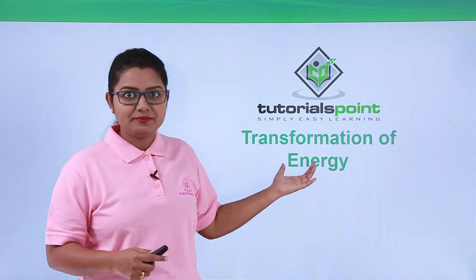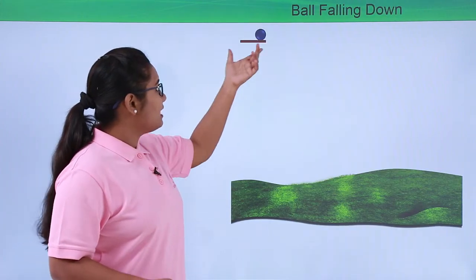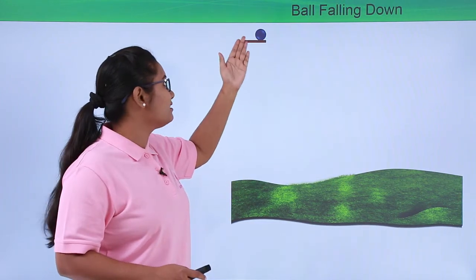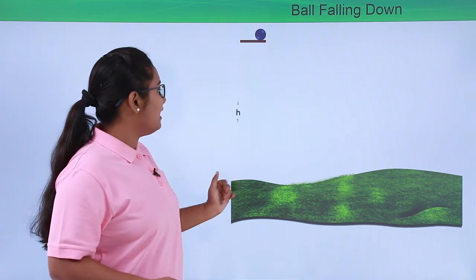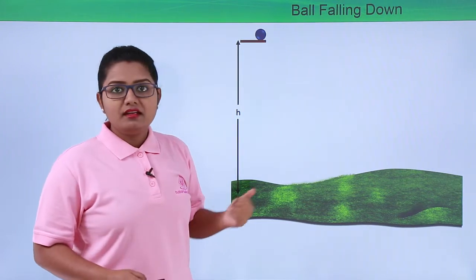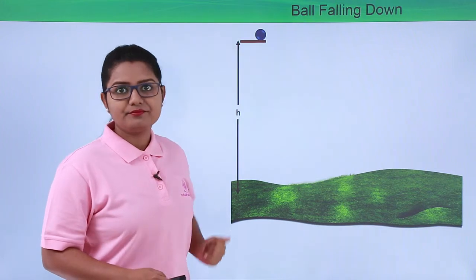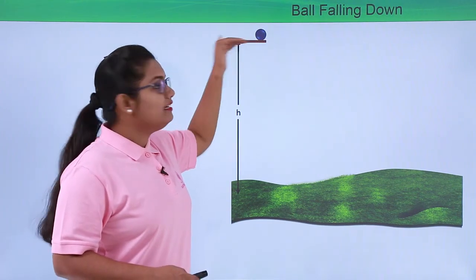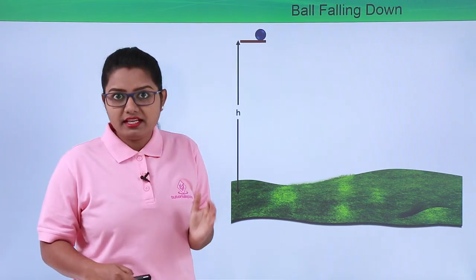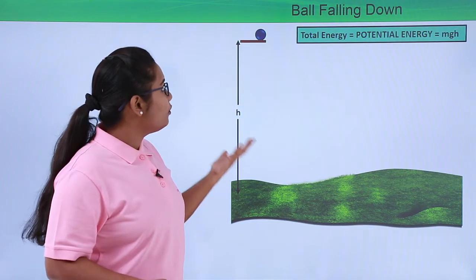So change of energy from one form to another is what we call transformation of energy. For a better understanding, let us take an example of a falling ball. Let's say this ball is at a certain height H above the ground. Now let us see what kind of energy this ball has at this point in time.